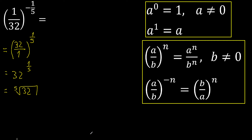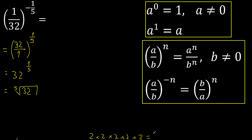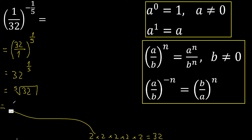That multiply is 32. 5 equal numbers: 2 multiplied by 2 is 4, multiplied by 2 is 8, multiplied by 2 is 16, multiplied by 2 is 32. 5 equal numbers, therefore this is 2. Finished.